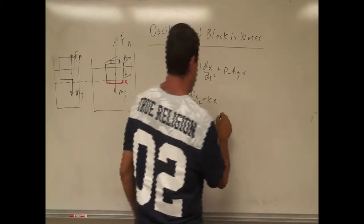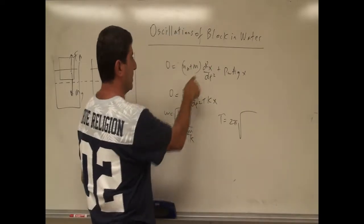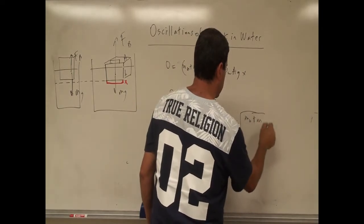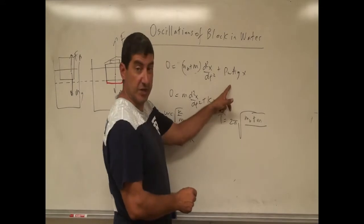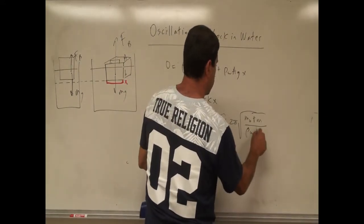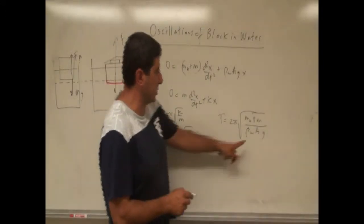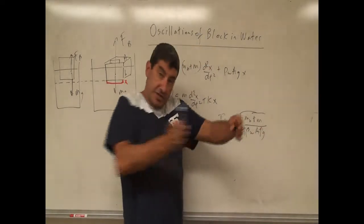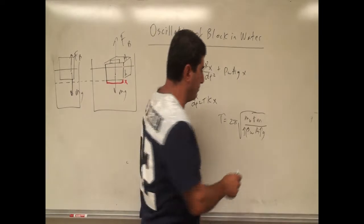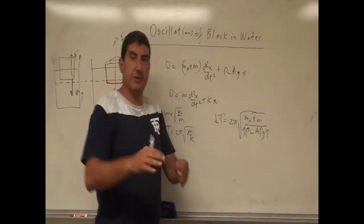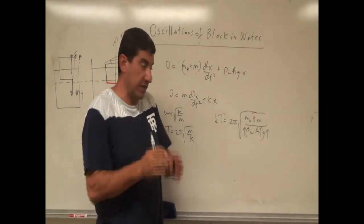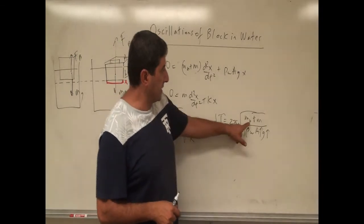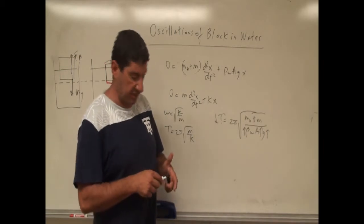In our case, the period is 2π times the square root of (mass of block plus extra mass) divided by k, where k is not a spring constant but density of water times surface area of the block times gravity. The bigger the density of water, the bigger the cross-sectional surface area, and the bigger gravity — the shorter the period, meaning it oscillates faster. If the block of wood is smaller in surface area it will have a longer period. Adding more weight on top also increases the period.